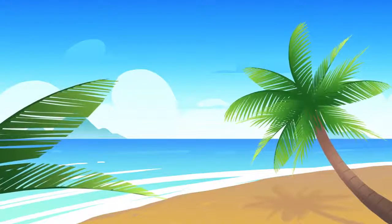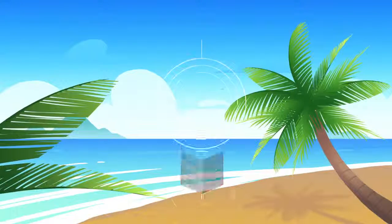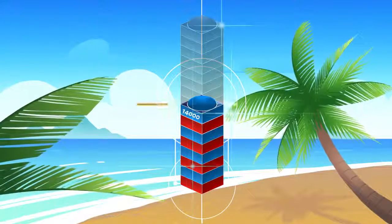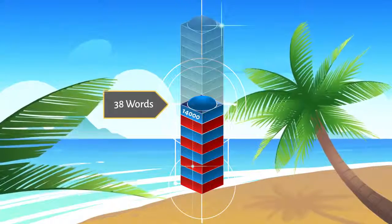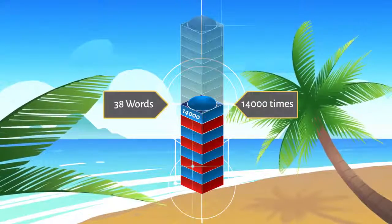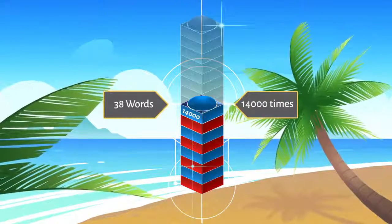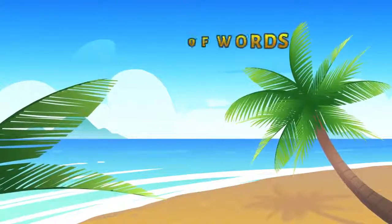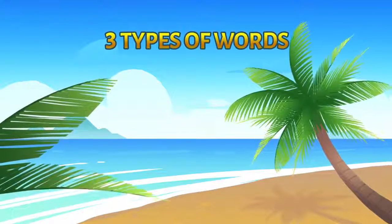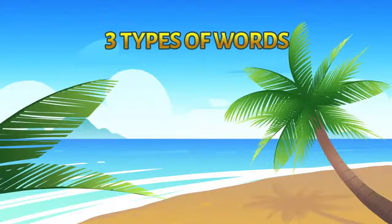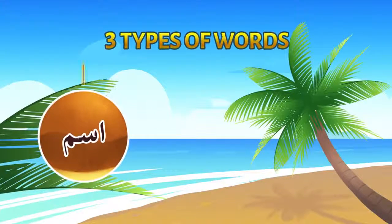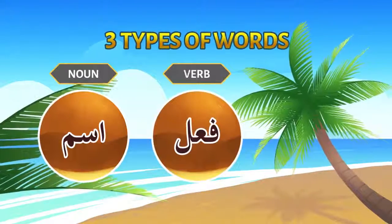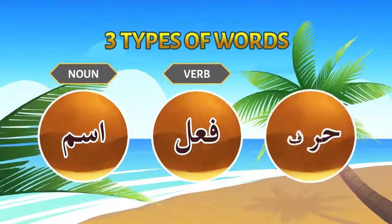From the first lesson till the end of this one, we have covered 38 words which occur almost 14,000 times in the Quran. A word in Arabic can be one of three things: ism (noun), fi'il (verb), or harf (particle).